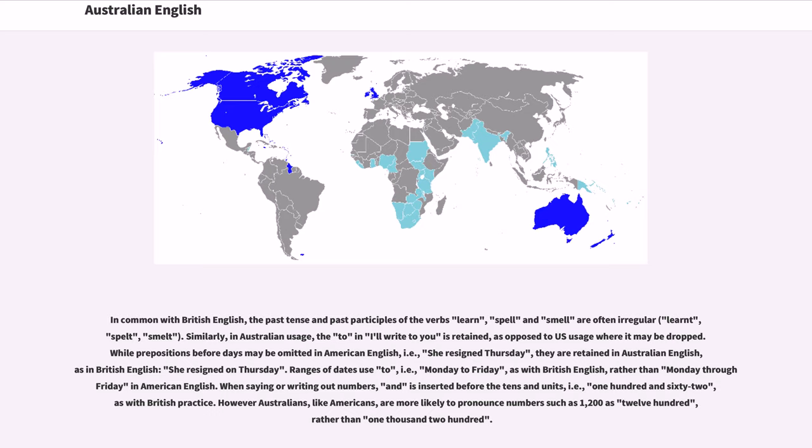Ranges of dates use to, that is, Monday to Friday, as with British English, rather than Monday through Friday in American English. When saying or writing out numbers, and is inserted before the tens and units, that is, one hundred and sixty-two, as with British practice. However Australians, like Americans, are more likely to pronounce numbers such as 1200 as twelve hundred, rather than one thousand two hundred.